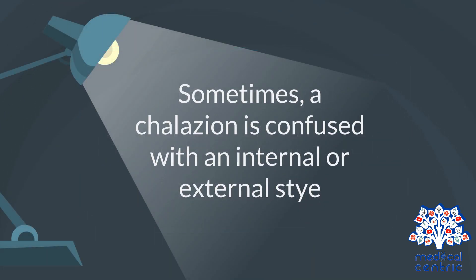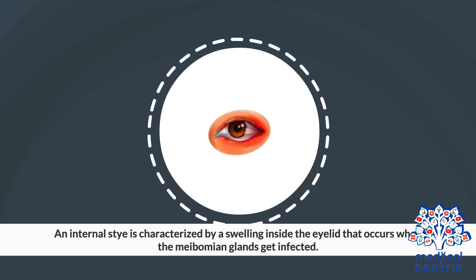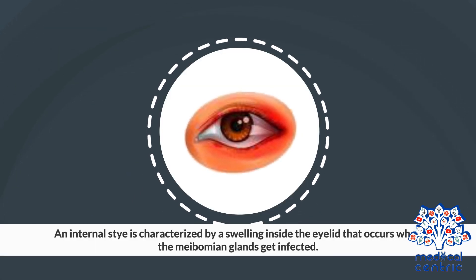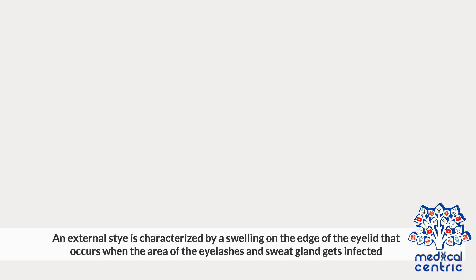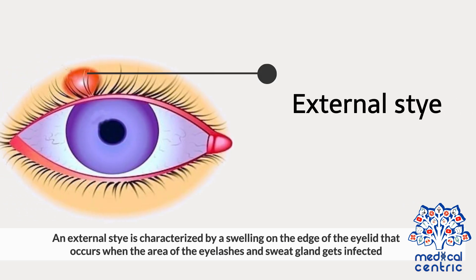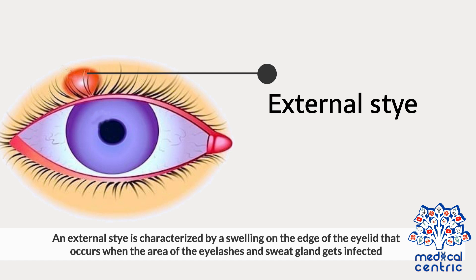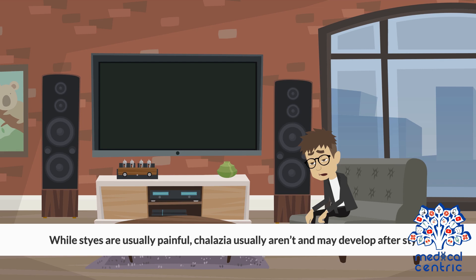Sometimes a chalazion is confused with an internal or external stye. An internal stye is characterized by a swelling inside the eyelid that occurs when the meibomian glands get infected. An external stye is characterized by a swelling on the edge of the eyelid that occurs when the area of the eyelashes and sweat gland gets infected. While styes are usually painful, chalazia usually aren't and may develop after styes.